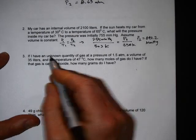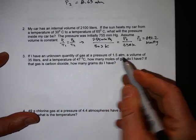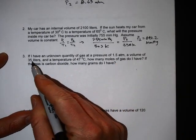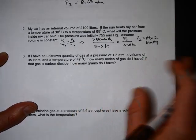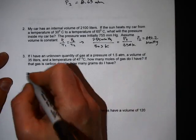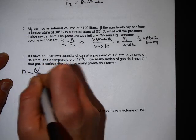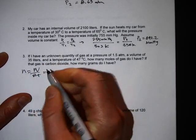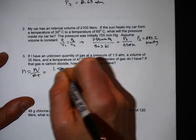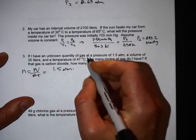Next one: unknown quantity of gas at a pressure of 1.5 atmospheres, volume 35 liters, temperature of 47, how many moles of gas do I have? For the first question, moles is equal to PV over RT using the ideal gas law, so plug in the pressure 1.5 atmospheres, the volume is 35 liters.